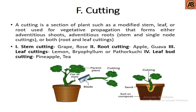Next is cutting, another type of asexual propagation. A cutting is a section of a plant such as a modified stem, leaf, or root used for vegetative propagation that forms adventitious roots, an adventitious stem single node, or both. Cutting may be classified into stem cutting, root cutting, leaf cutting, and leaf bud cutting. Stem cutting examples: grape, rose; root cutting examples: apple, guava; leaf cutting examples: lemon, Bryophyllum; leaf bud cutting examples: pineapple, tea. In the picture you can see that a cutting with a blade can independently grow into a plant.